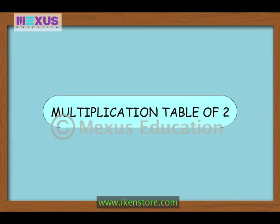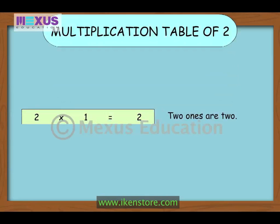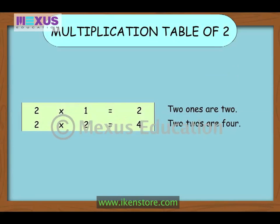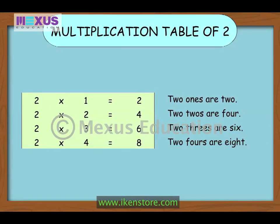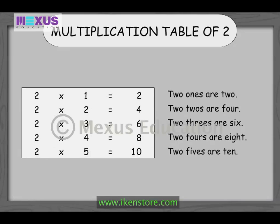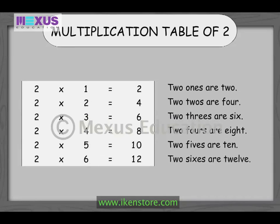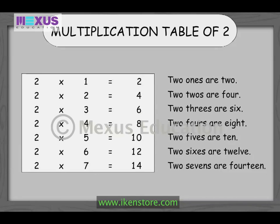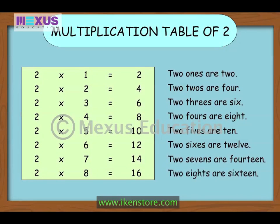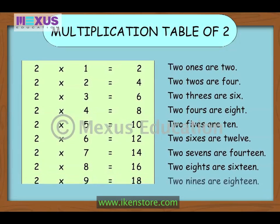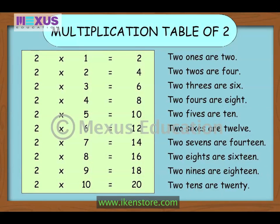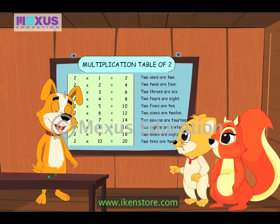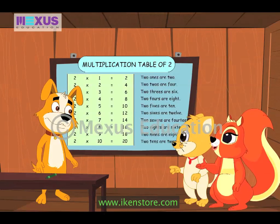Now let's look at the multiplication table for the number 2. 2-1s are 2, 2-2s are 4, 2-3s are 6, 2-4s are 8, 2-5s are 10, 2-6s are 12, 2-7s are 14, 2-8s are 16, 2-9s are 18, 2-10s are 20. Well, that wasn't so difficult was it? Not at all Busta!